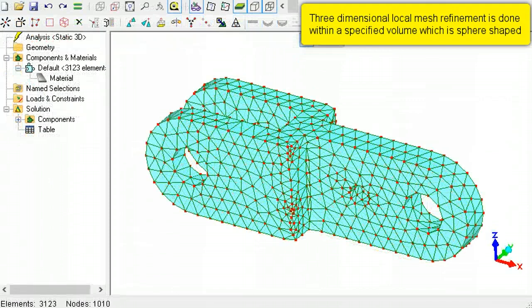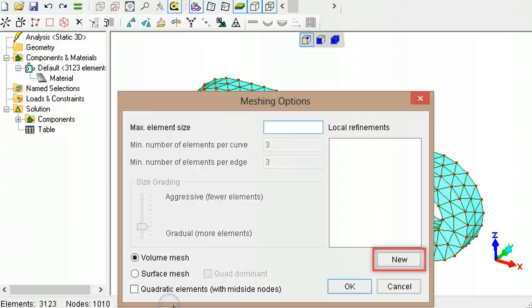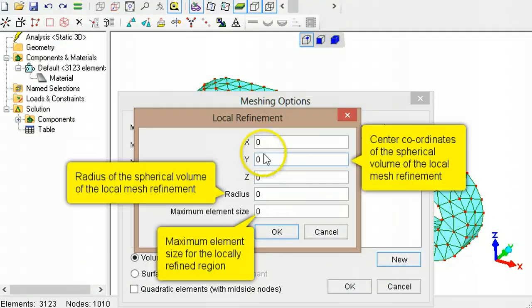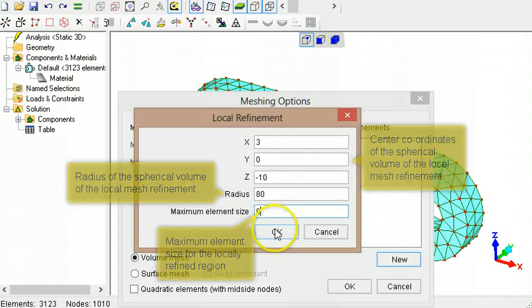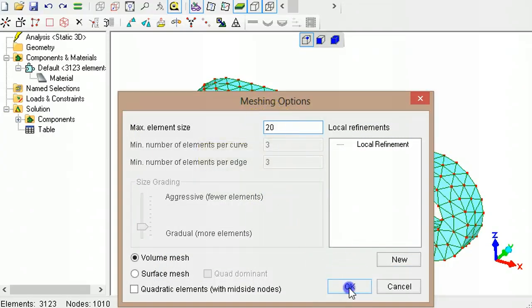For three-dimensional models, use the three-dimensional AUTA mesher. Click the New button to add a new local refinement. Type the coordinates where the refinement is to be centered, a radius around that point to which the refinement will extend, and the maximum element size for the refinement. Specify a maximum element size for the rest of the model, then click OK.